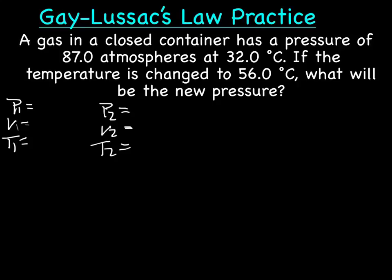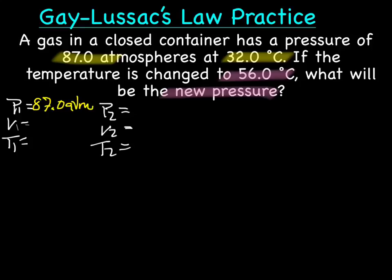Let me read through the story here. I have a gas in a closed container that has a pressure of 87 atmospheres at 32 degrees Celsius. So those go together. If the temperature has changed to 56 degrees Celsius, what will be the new pressure? So our pressure 1 is 87.0 atmospheres. And our temperature 1 is 32 degrees Celsius, which we need to change to Kelvin, which gives us 305 Kelvin. Our pressure 2, we don't know, and our temperature 2 is 56 degrees Celsius, which we need to change to Kelvin. And I've got 329 Kelvin.